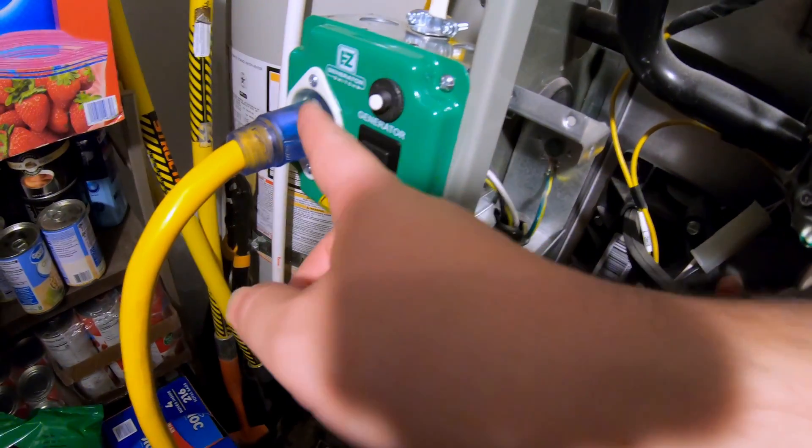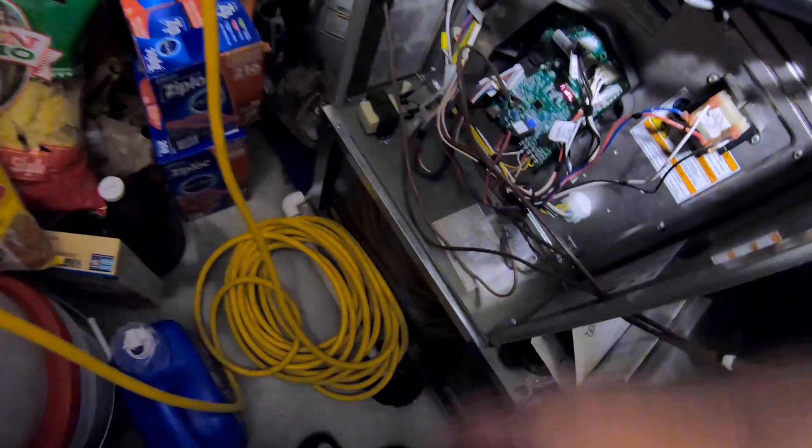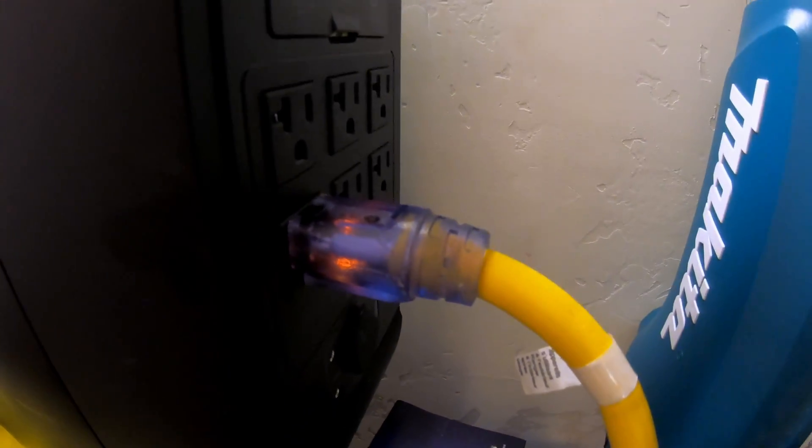So we've got the EcoFlow Delta II Max plugged in right here. You can see the cord comes down, goes through the big coil there, and it comes up and plugs into the outlet right here. So let's fire this up.